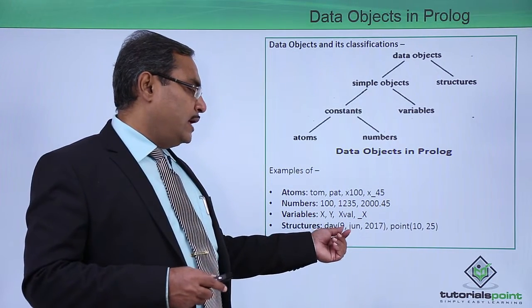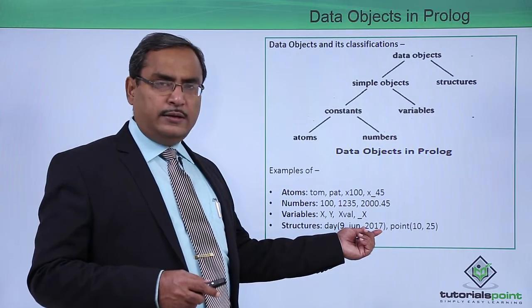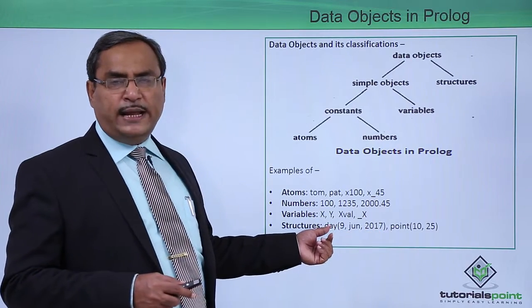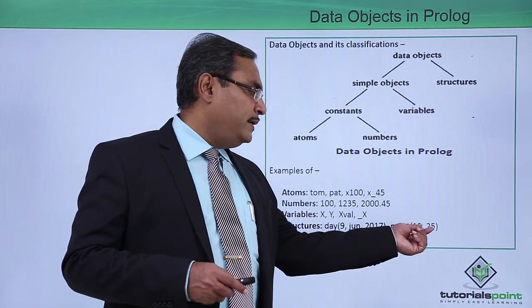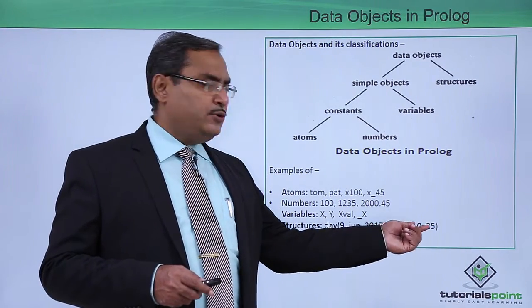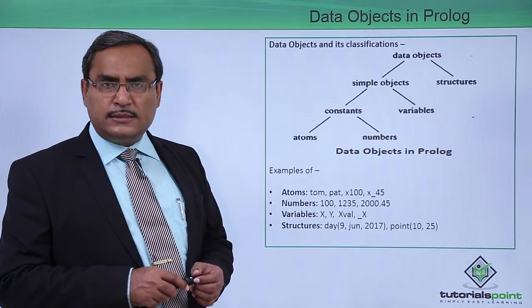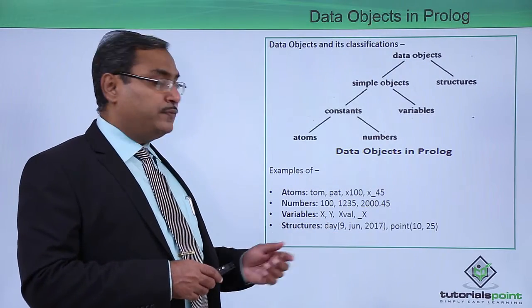Structures: day(9, June, 2017) - this is known as the structure name, also known as the functor. point(10, 25) - here point is a functor and 10 and 25 are two arguments. These are the representations of structures.